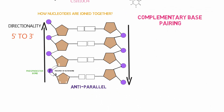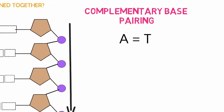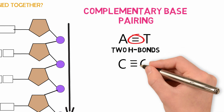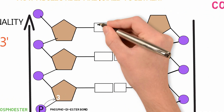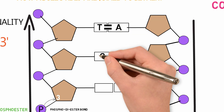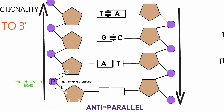In complementary base pairing, one strand is complementary to the other, meaning a particular purine base pairs with a pyrimidine base. Adenine joins with thymine by two hydrogen bonds, and cytosine joins with guanine by three hydrogen bonds. The two strands are held together by these hydrogen bonds. Thousands of nucleotides bond in this way to form the complete structure of the DNA molecule.